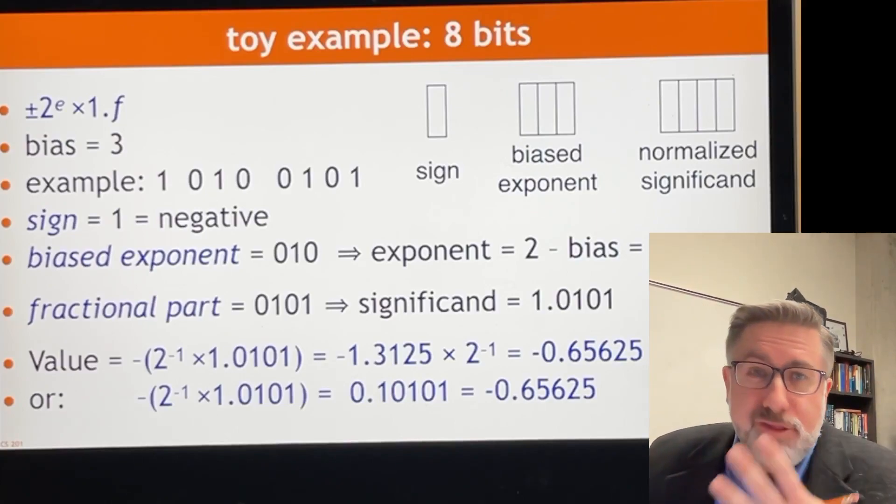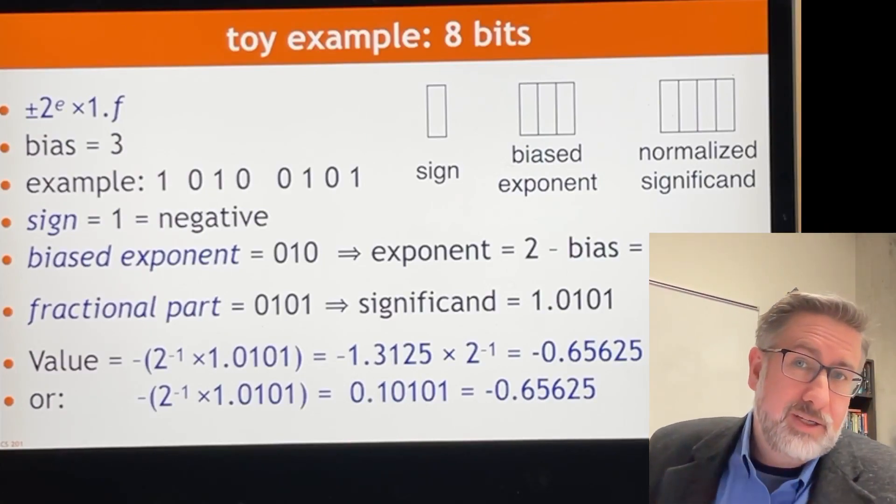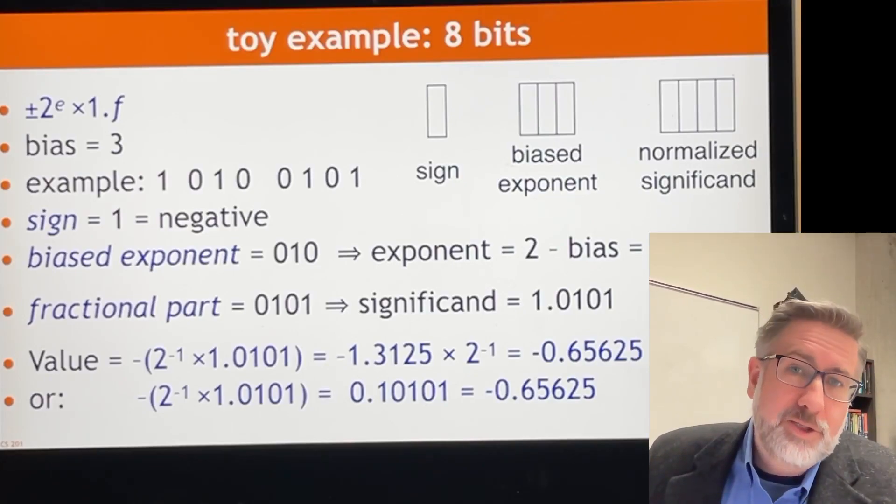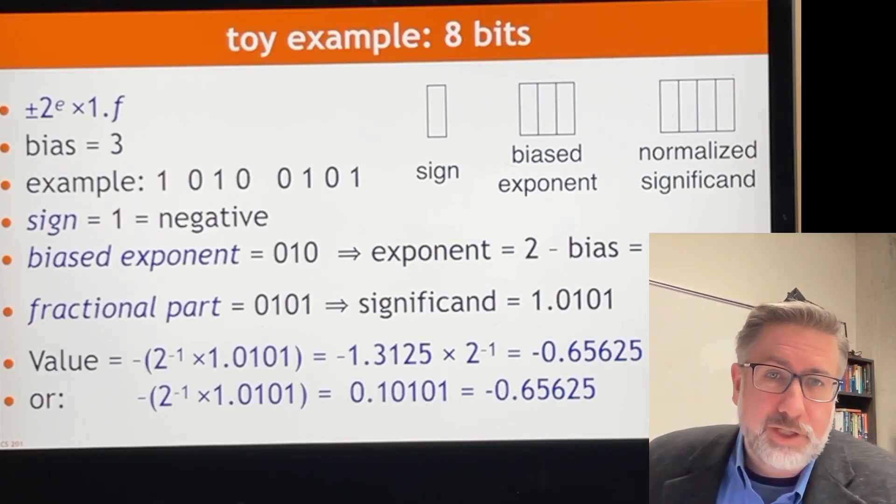We're going to need three different pieces of information, the sign, the exponent, and the significand, and we're going to put them together into a number that represents the number we're looking for.